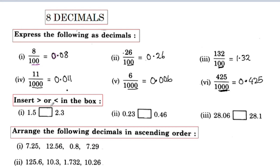Next, insert greater than or less than in the box. Here we have greater than or less than in the box. 1.5 compared to 2.3 — we will check the decimal point on the left. 1 is less than 2, so we have the less than sign.